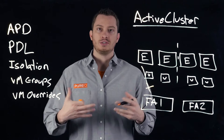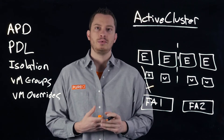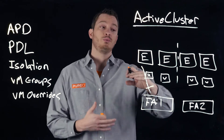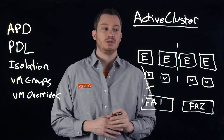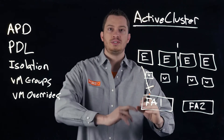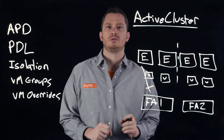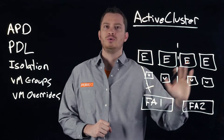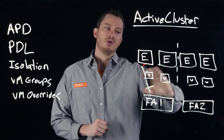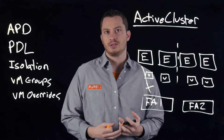After APD is considered the state for that volume, there's an additional configurable timeout inside of vSphere HA that the host can wait for. At that point, it will restart those virtual machines on another host. So if this entire storage array went down and the whole storage network's gone, neither of these hosts may have access to it, but maybe the hosts on the other side of that stretch cluster do. vSphere HA will restart those virtual machines on whatever surviving hosts have access to that storage.